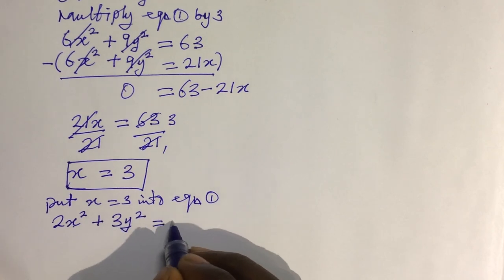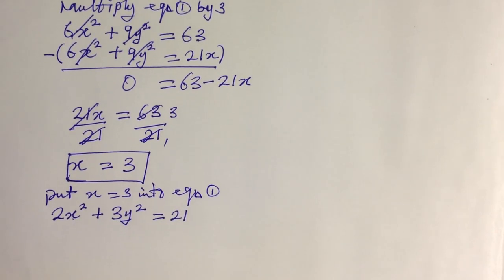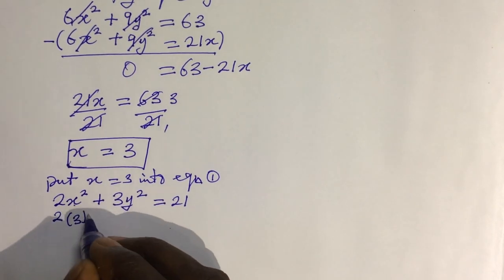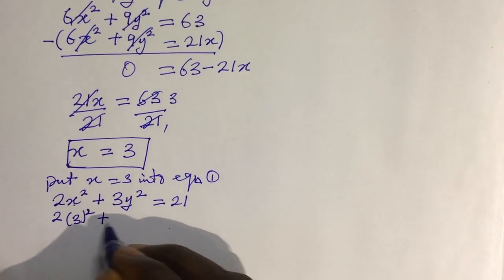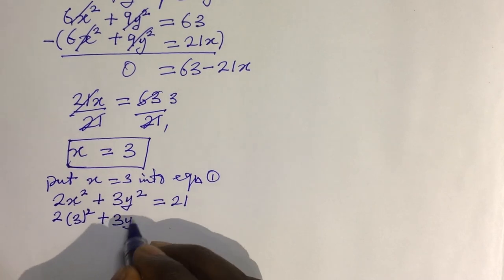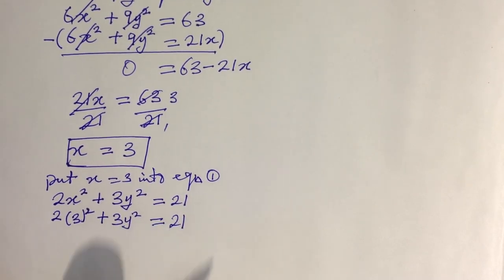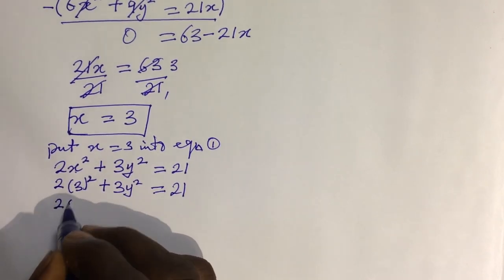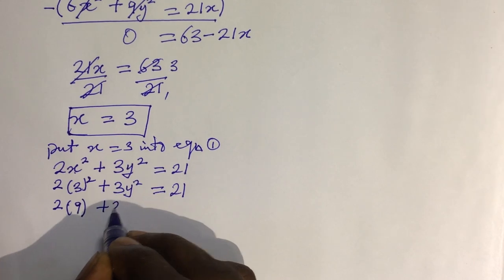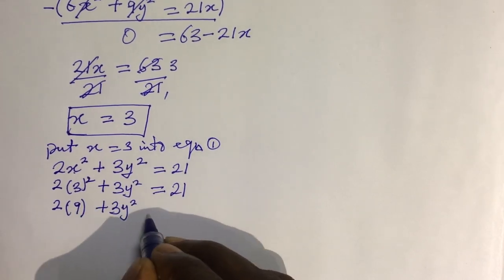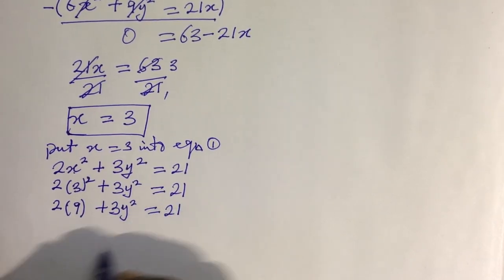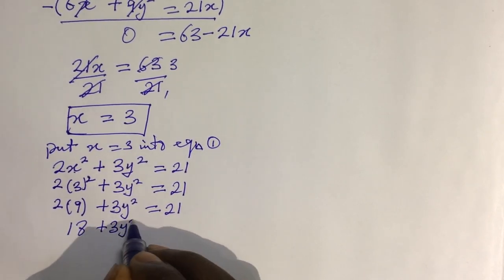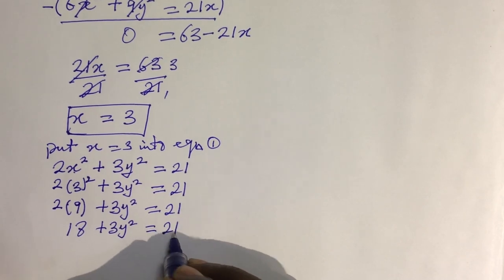Substituting x = 3 gives: 2 × 3² + 3y² = 21, which becomes 2 × 9 + 3y² = 21, so 18 + 3y² = 21.